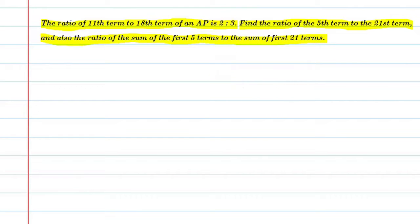Basically question in your question is that A11 upon A18 is equal to 2 by 3. So what do you need to find? The ratio of 5th term and 21st term, it means A5 upon A21. Similarly, the other thing you need to find is the sum of 5 terms upon sum of 21 terms. So let's start this question.